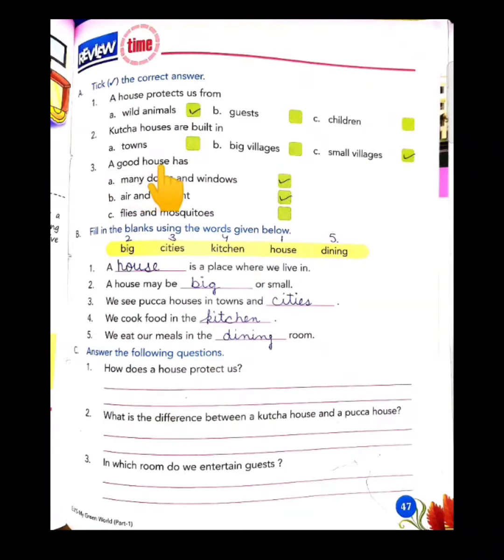Number three: a good house has many doors and windows, air and sunlight, flies and mosquitoes. A good house should have windows and doors. Ventilation should be proper and sunlight should come properly. These two options are correct.